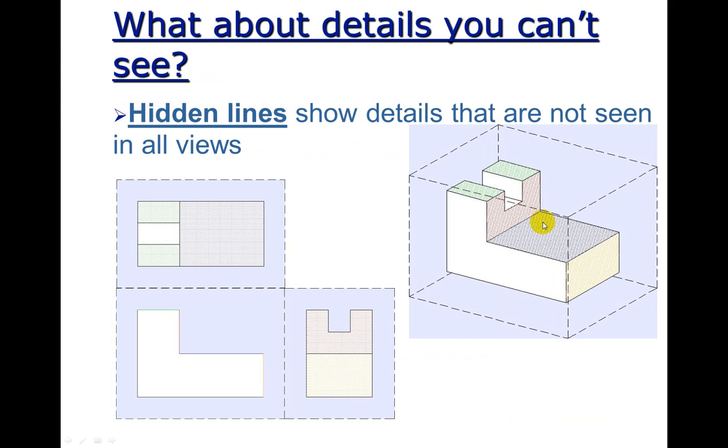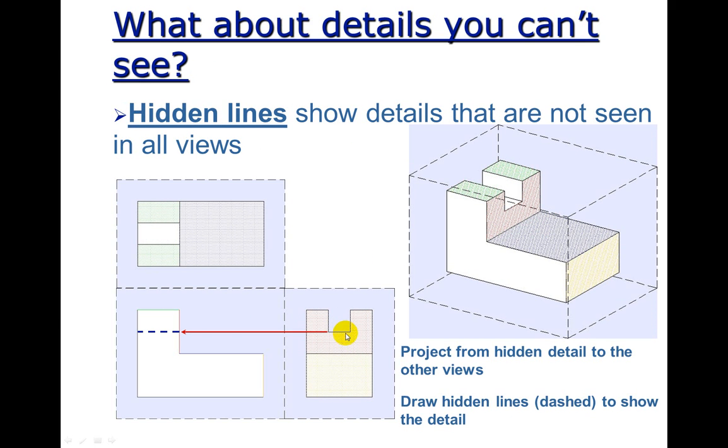Now, on the next one, notice we're going to show the hidden lines. We should have a hidden line here because there's a cutout. Notice we have a cutout, an object line here. So right along the same level, we would have a hidden line.